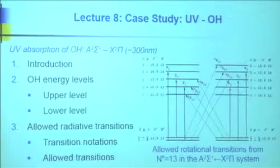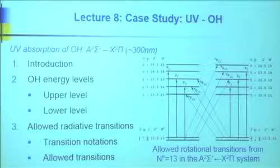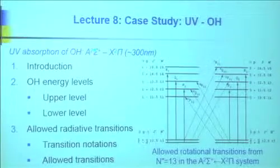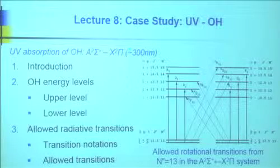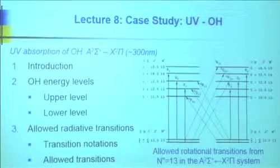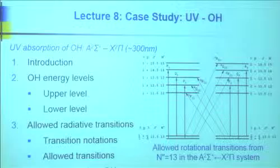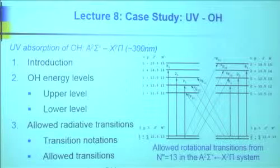This may look like a bit of a surprise — what are we doing with this A²Σ? You'll learn that the transitions we care about always have the same multiplicity, they always have the same spin. We have different rules for how lambda can change. A just means it's the first electronic energy state up with the same multiplicity two. You go from capital X, A, B, C, and so on.